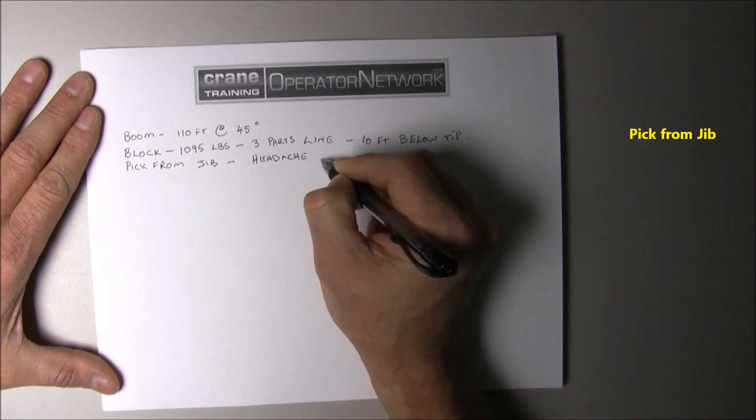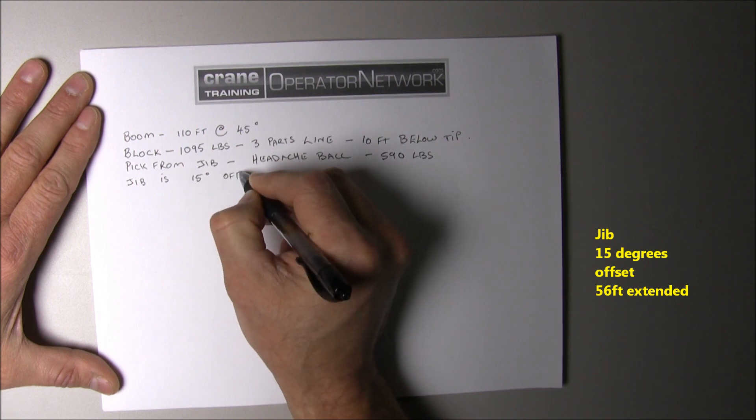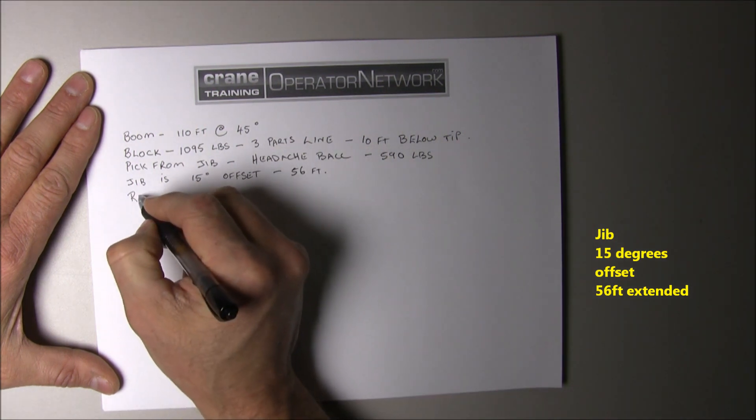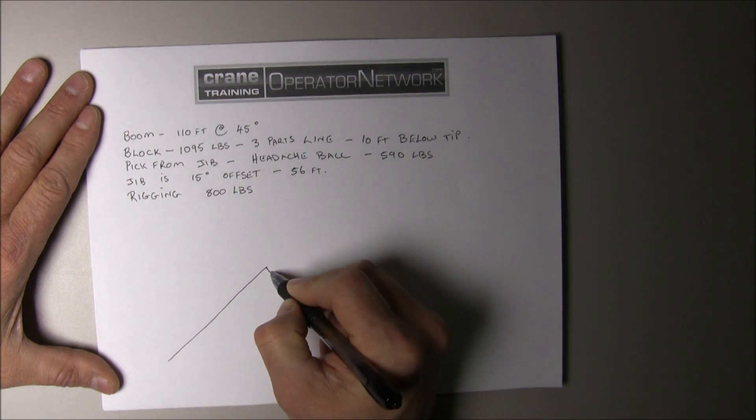You'll be picking from the jib. The headache ball is 590 pounds. The jib is offset at 15 degrees and has a total length of 56 feet. The rigging is 800 pounds.